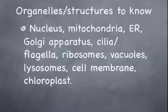The Golgi apparatus is totally the UPS or mailman of the cell — it transports stuff in and out of the cell. Cilia and flagella are used for movement; cilia are little hairs, and flagella is a tail. Ribosomes produce proteins for the cell and can be on the ER or floating around the cell. Vacuoles are for storage, and lysosomes break up molecules — they're sort of like the stomach of the cell.